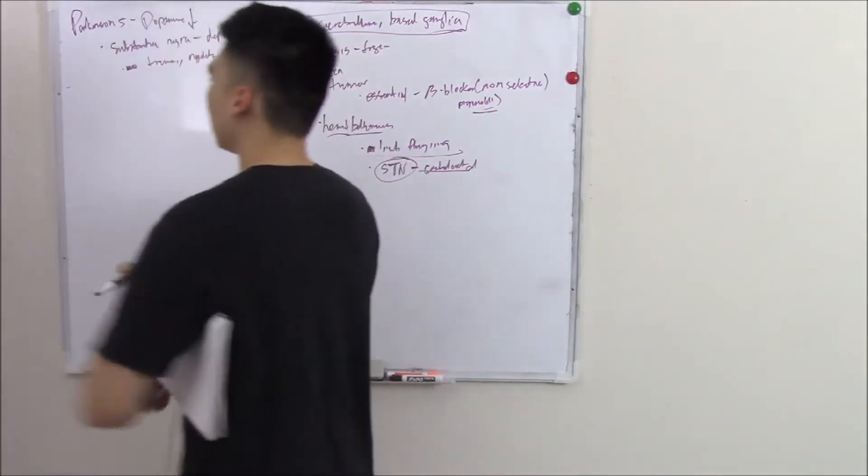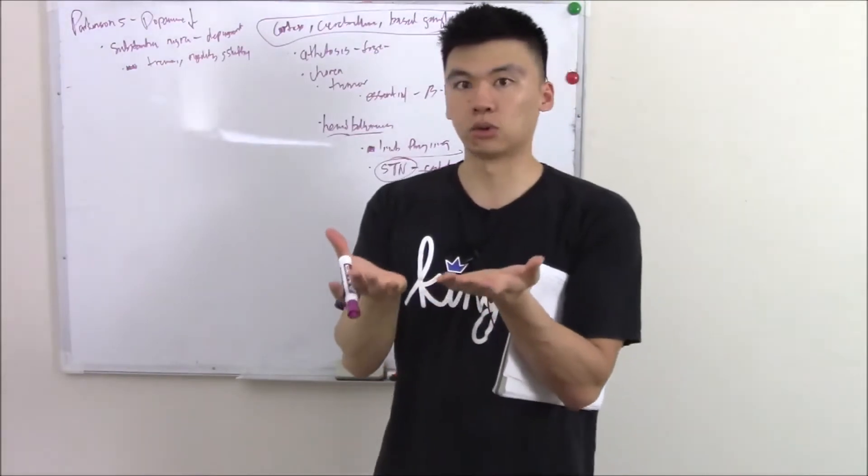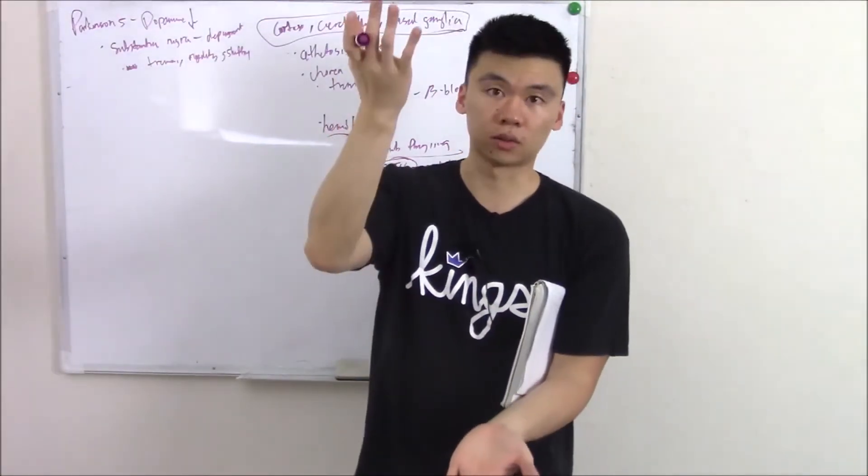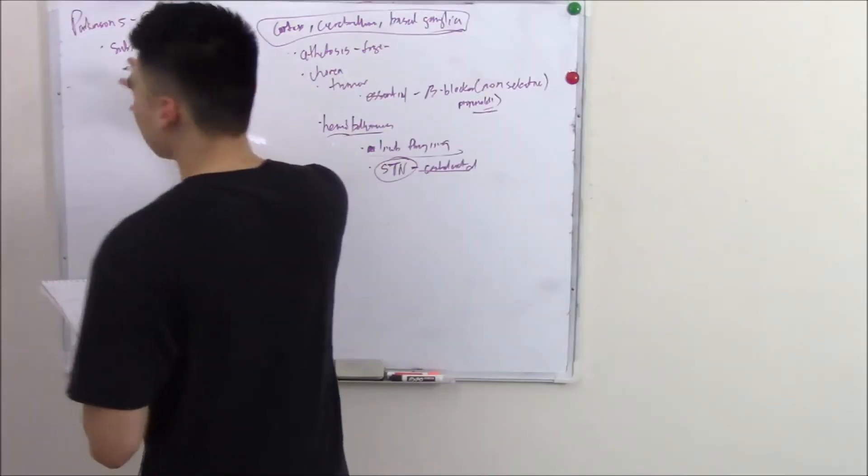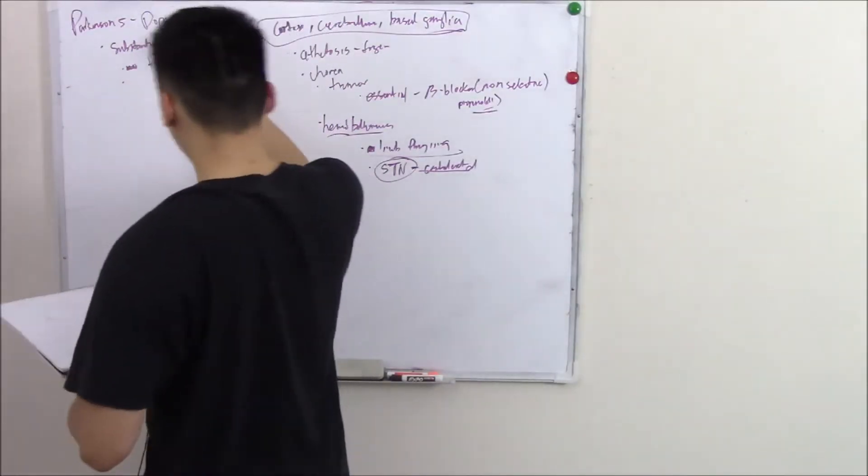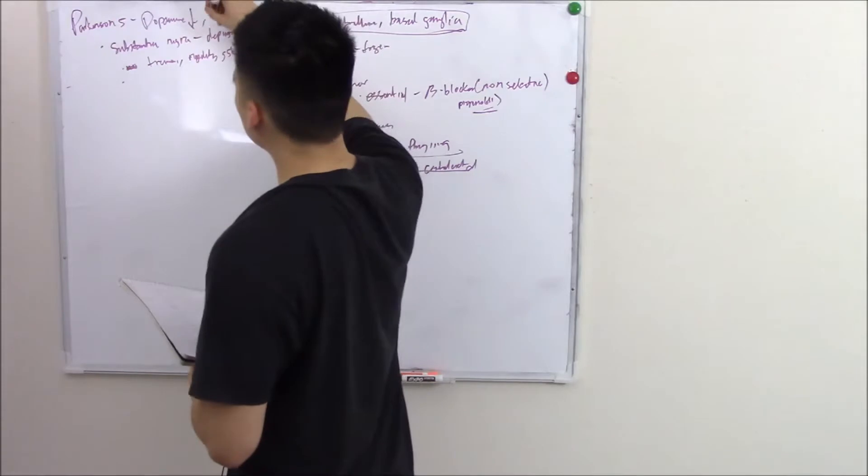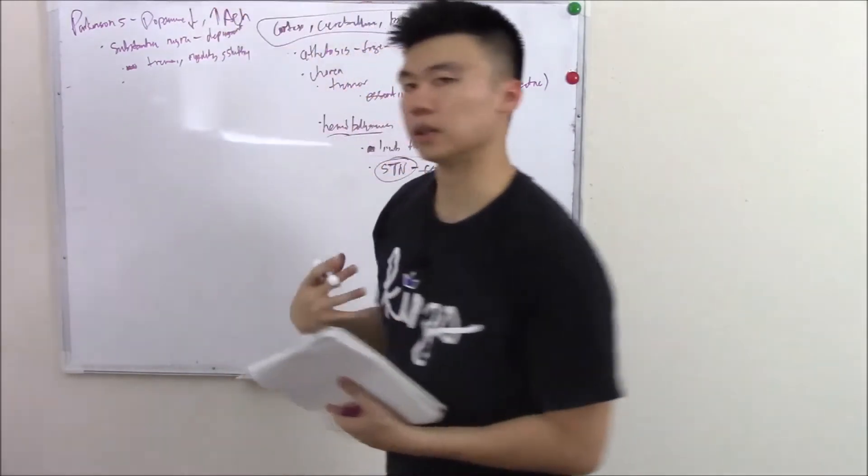And one thing you should know, dopamine and acetylcholine kind of exist in equilibrium. So if you have low dopamine then acetylcholine rises. If you have low acetylcholine then dopamine rises. So the things you can find neurotransmitter-wise will obviously be decreased dopamine, but you'll also see increased acetylcholine just from that imbalance.